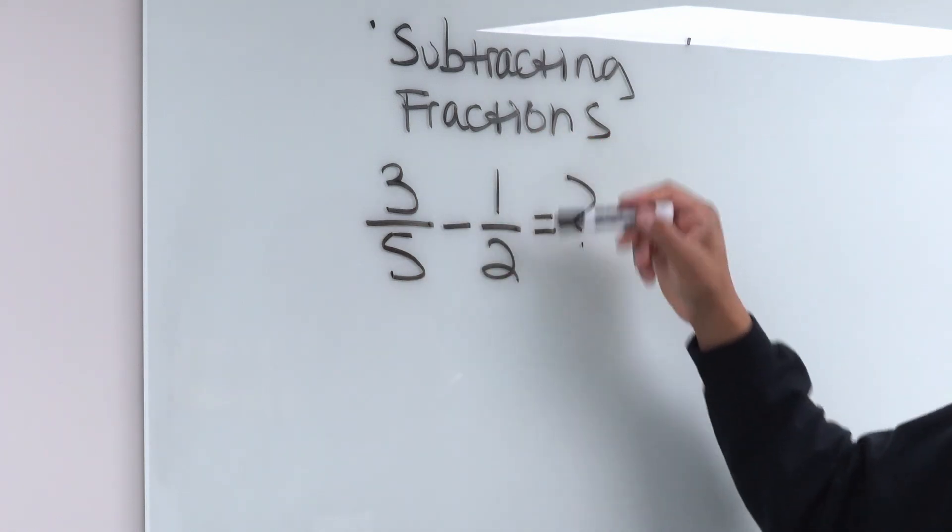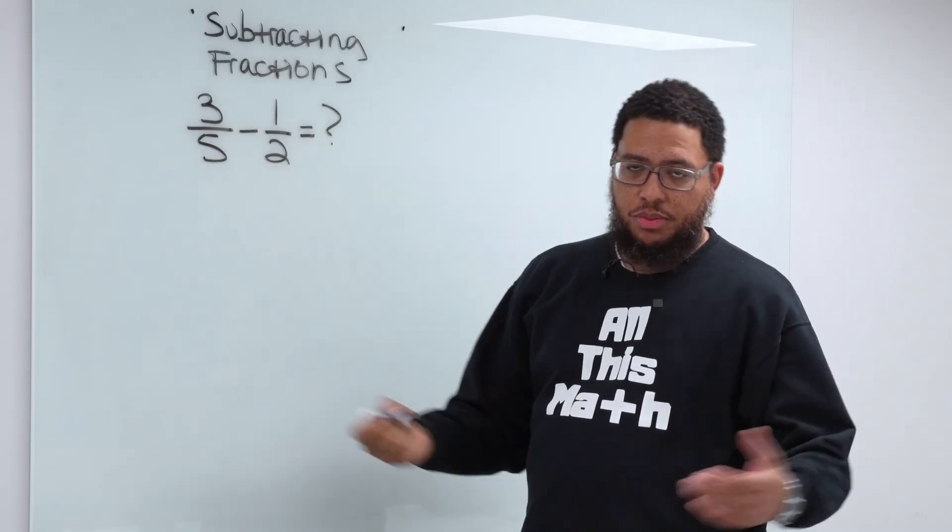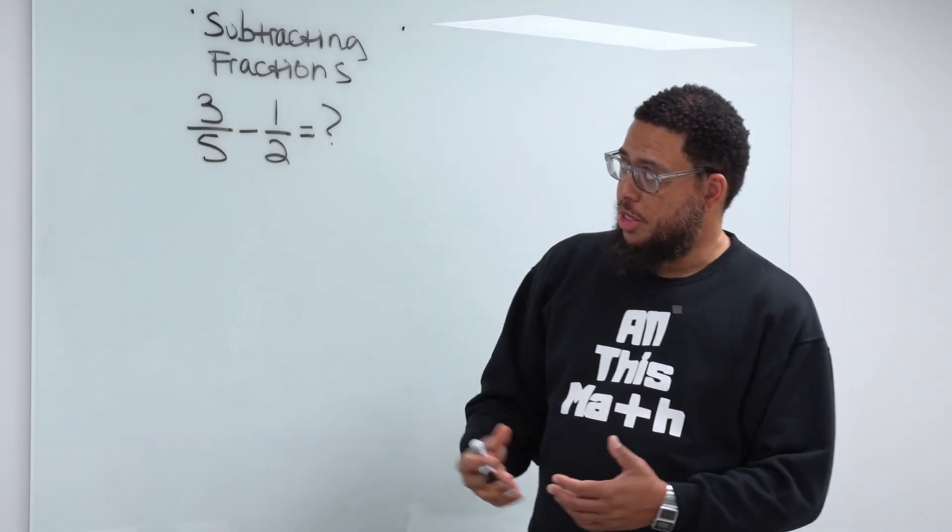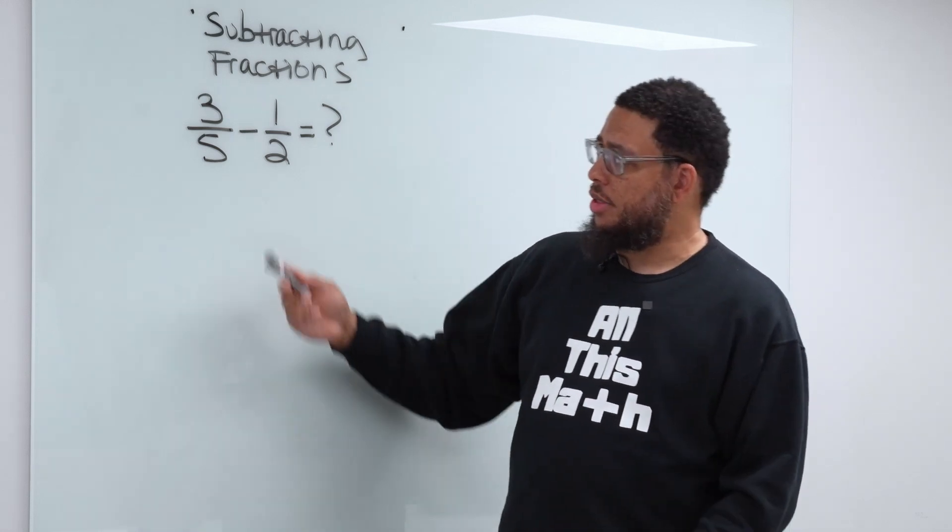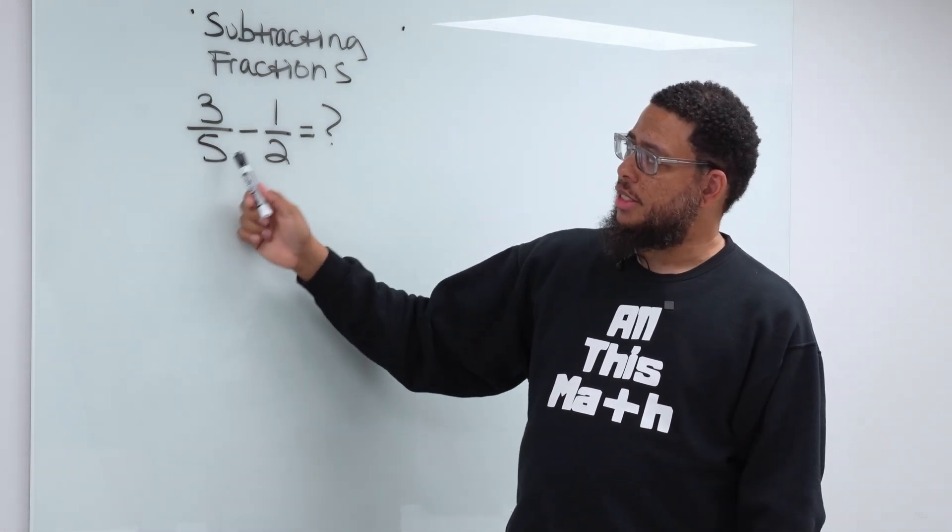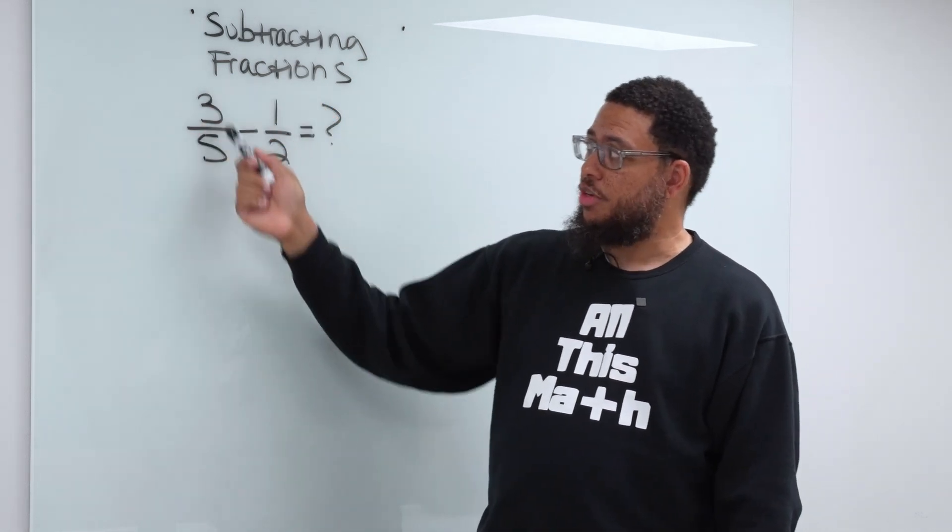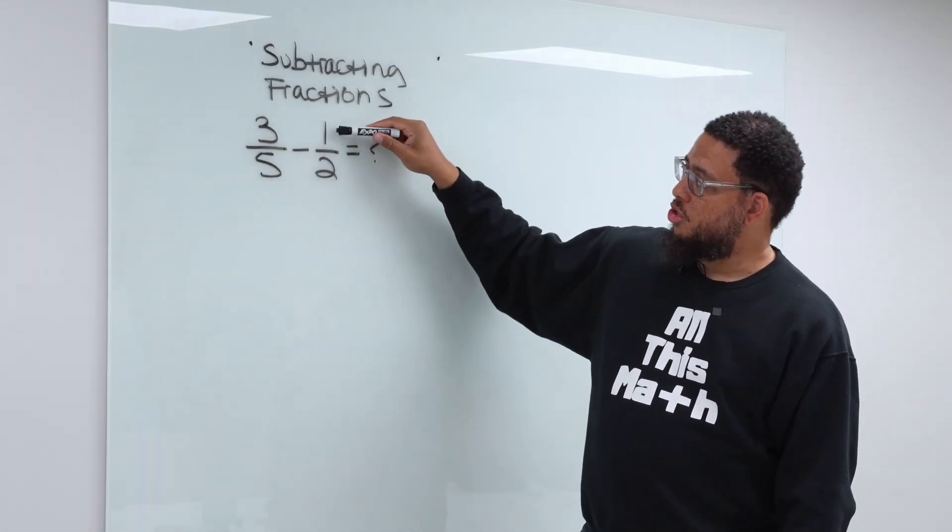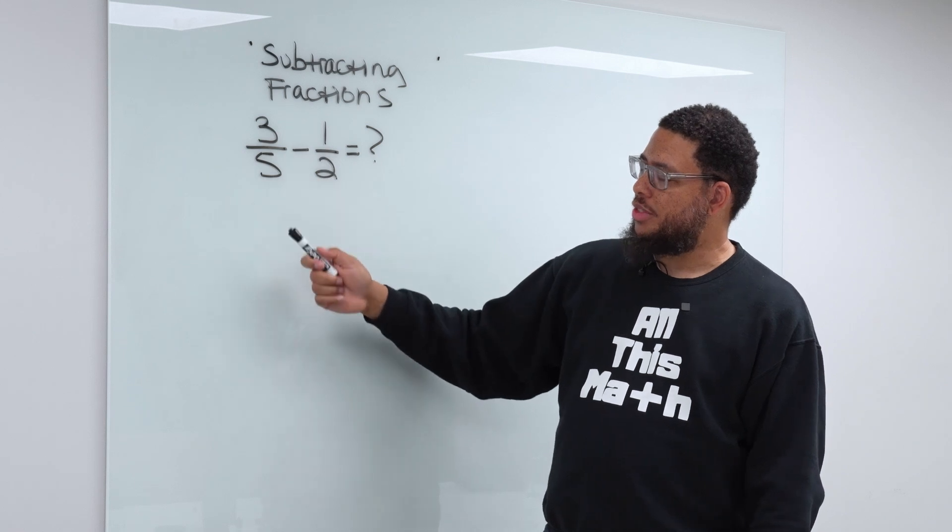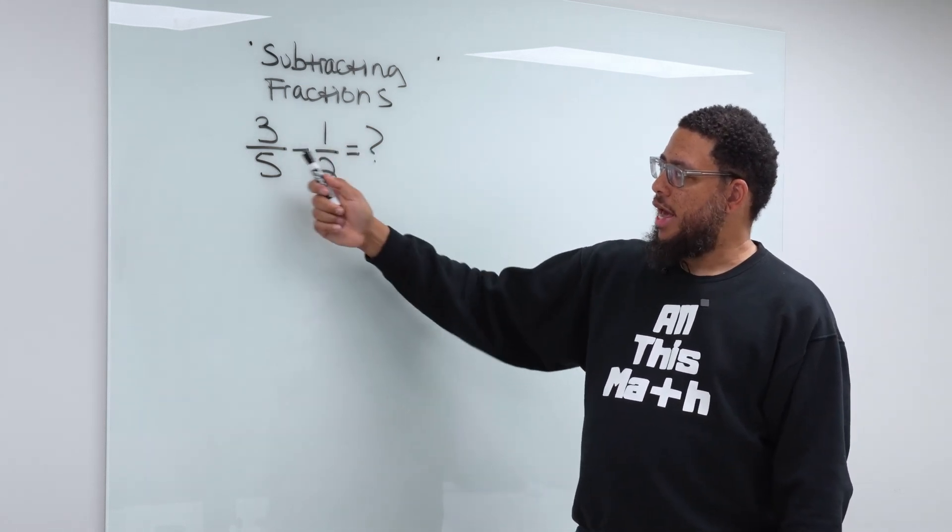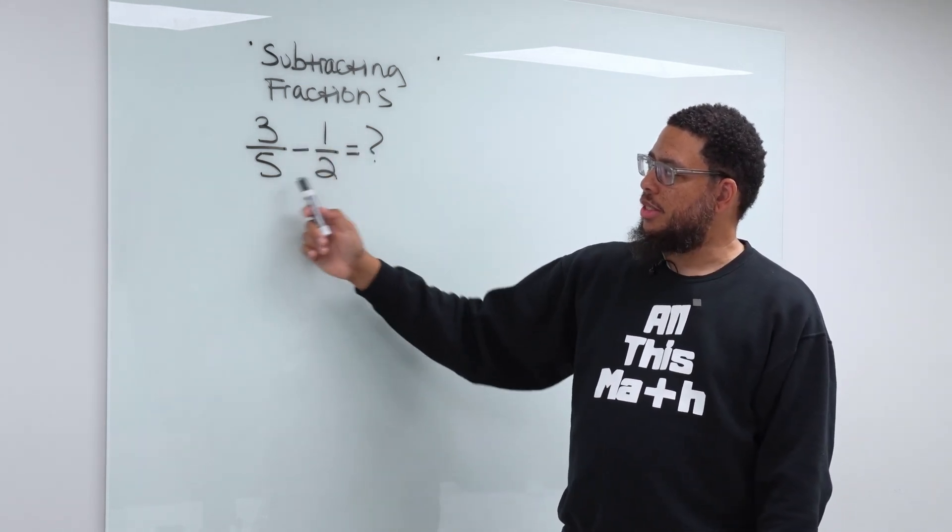So we have 3/5 - 1/2. Three-fifths means we took an object, could be a cake or something, and we cut it up into five slices. And then let's say we focus on three of those slices or three of those slices got eaten. That's what three-fifths represents. But then we want to subtract one-half from three-fifths. You can't really subtract one-half from three-fifths because your denominators aren't the same.